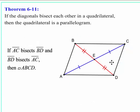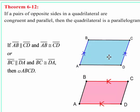Theorem 6-11 states that if the diagonals of a quadrilateral bisect each other — so that this segment is congruent to that segment, and this segment is congruent to that segment — then it's a parallelogram. Theorem 6-12 is something new: if you have a quadrilateral and a pair of opposite sides that are both congruent to each other and parallel to each other, then the figure is a parallelogram. If this side is congruent to that side and that same pair of sides are parallel to each other, it's a parallelogram.